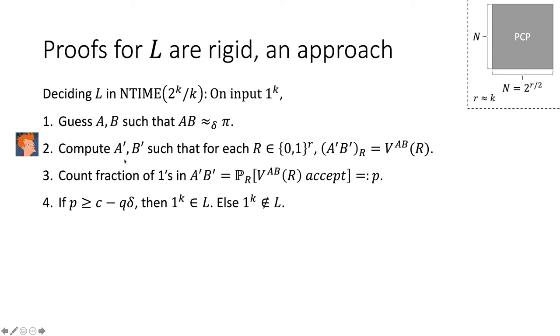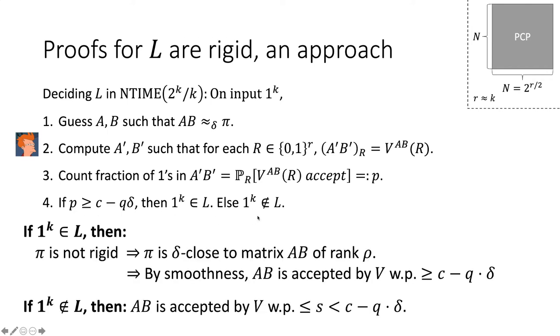So if we had A prime and B prime, that their product is the computational matrix, well, we know we can count the number of ones in the product, but the number of ones in the computational matrix is exactly the acceptance probability. And so what the decision procedure does, it looks at the acceptance probability. If it's high enough, it'll accept, otherwise it'll reject. This is indeed a good decision procedure. Why? Because if the input was in the language, there is some proof that convinces the verifier. Completeness.